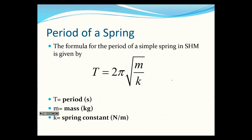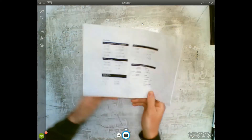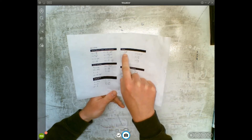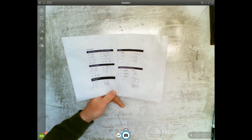That formula can be found under Waves in your formula sheet. There are two formulas there: the first is for the spring, the second is for the pendulum. Make sure you know which one is which.